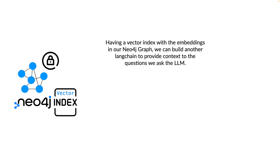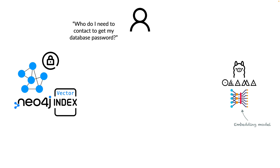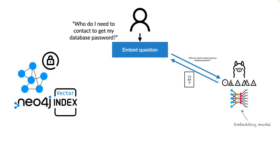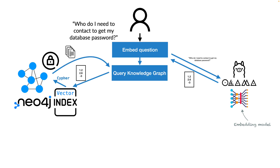Having the vector index with embedding vectors in our Neo4j graph, we can build another LangChain to provide context to the questions we ask the LLM. If the user asks 'who do I need to contact to get my database password?' we could embed this question using the same embedding model we used to embed our nodes, retrieving a vector that represents the question in this embedding space. We use this embedding vector to query the vector index, which gives back three similar nodes with a similarity score. We then use those nodes to query the knowledge graph on its structure — the relationships — with a plain Cypher query to retrieve even more context.